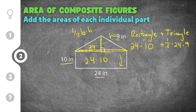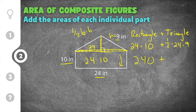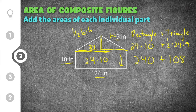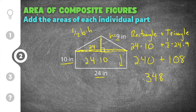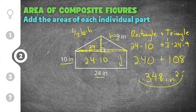Finding each area individually: twenty-four times ten is two hundred and forty, plus one-half times twenty-four times nine is one hundred and eight. Adding those together, two hundred and forty plus one hundred and eight gives us three hundred and forty-eight. That's in inches squared, so three hundred and forty-eight inches squared is the area of this composite figure.